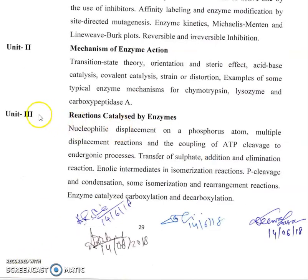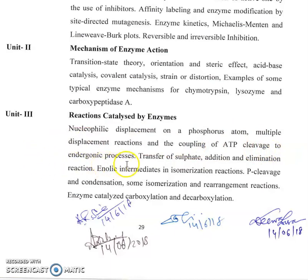This video is actually Unit 3: reactions catalyzed by enzymes. The topics covered are: nucleophilic displacement on phosphorus, multiple displacement reactions and the coupling of ATP cleavage to endergonic processes, transfer of sulfate, addition and elimination reactions, enolic intermediate in isomerization reactions.